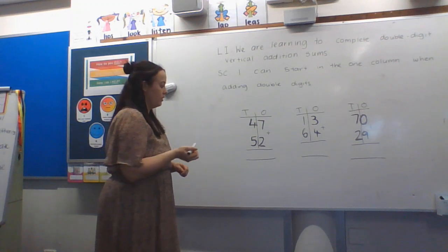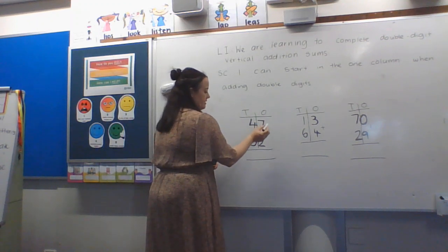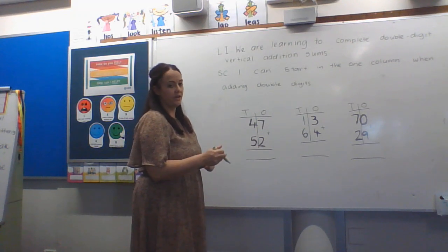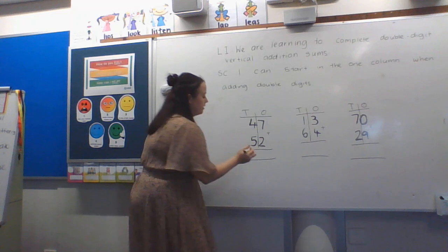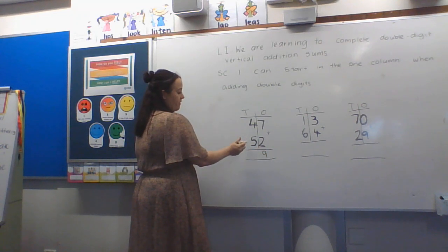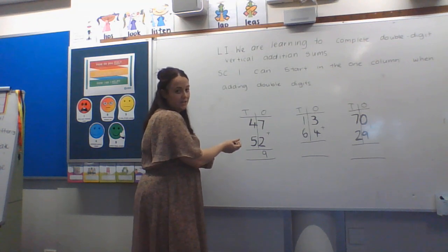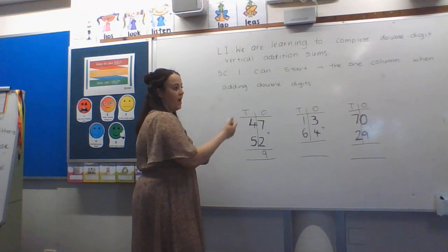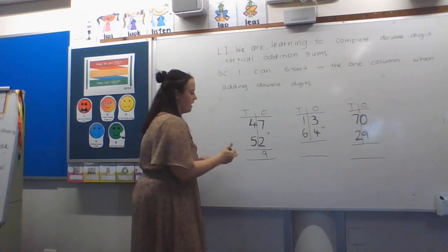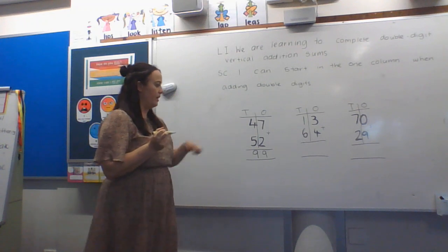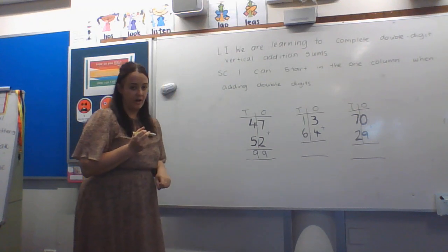So starting in our ones column we are going to do some addition. Seven plus two. I know if I used count on I would start with seven, eight, nine. Then we have four plus five. Now if I did near doubles I know five and five is ten so five and four, four is one less so that would be nine. My answer would be forty seven plus fifty two equals ninety nine.